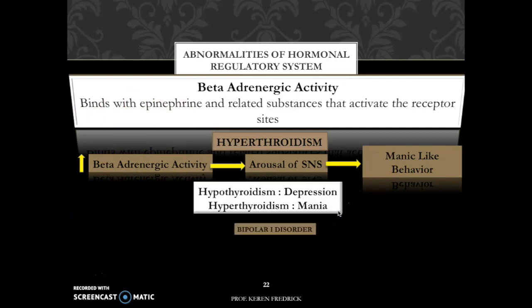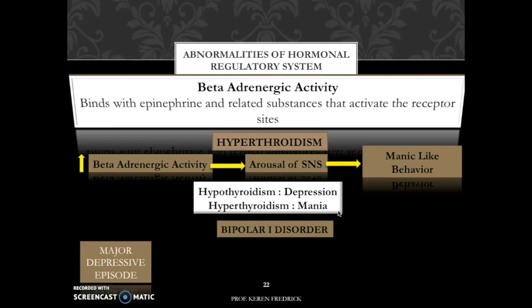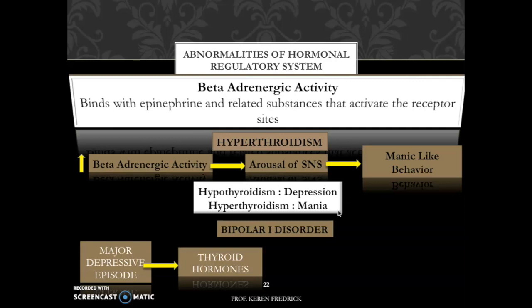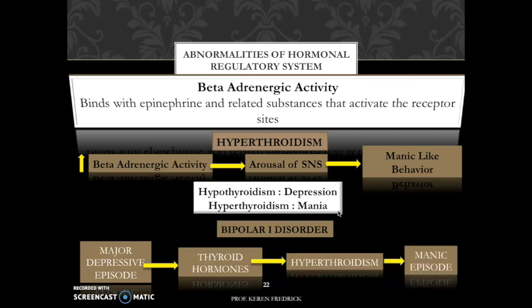For example, when a bipolar one patient is in a major depressive episode and antidepressants are not working, a doctor may prescribe thyroid hormones to enhance antidepressant effects. However, these thyroid hormones can lead to hyperthyroidism, which in turn could trigger a manic episode, because beta-adrenergic activity becomes extremely high in hyperthyroidism, leading to manic-like behavior. Thus we can say that hypothyroidism may be more related to depression, whereas hyperthyroidism may be more related to mania.